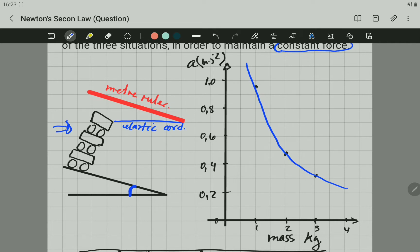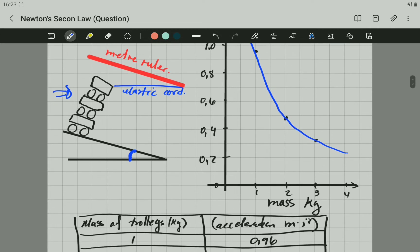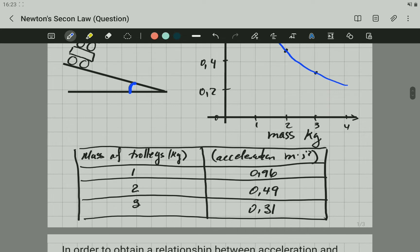First, he did it with only one trolley. Then he did it with two trolleys. And lastly, he repeated the experiment with the three trolleys. The acceleration versus mass graph is this one. And the data was recorded in this specific table.